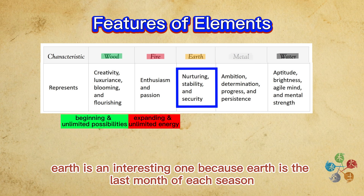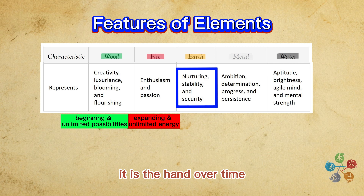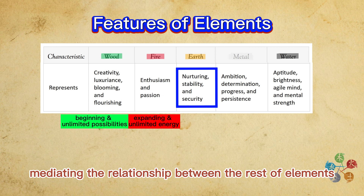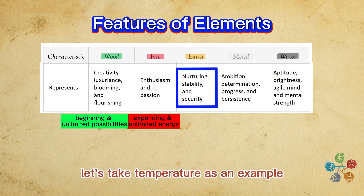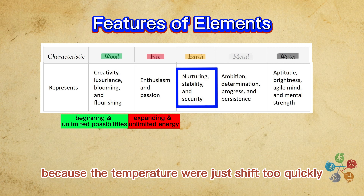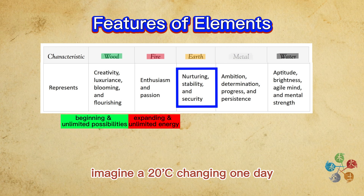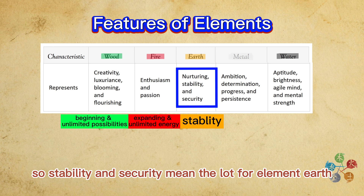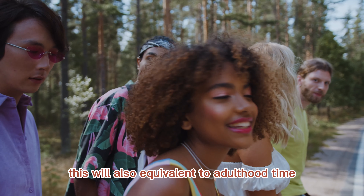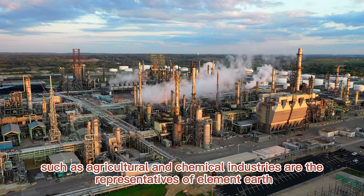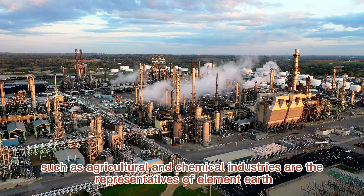Earth is an interesting one because Earth is the last month of each season — it is the handover time. Strictly speaking, the element Earth contains all four other elements; it's like a mediator, mediating the relationship between the rest of the elements. Nothing will survive on this planet without Earth because the temperature would just shift too quickly. So stability and security mean a lot for element Earth. This is equivalent to adulthood. Traditional industries such as agriculture and chemical industries are the representatives of element Earth.